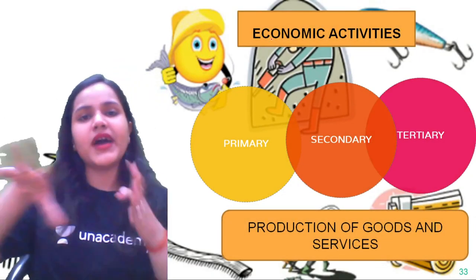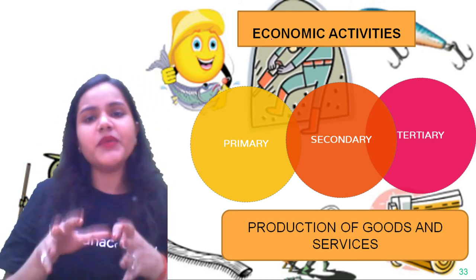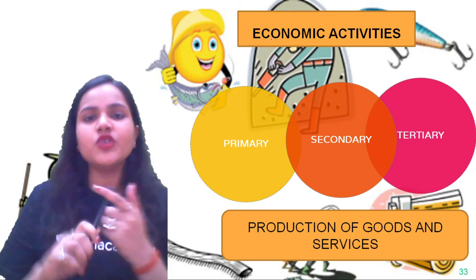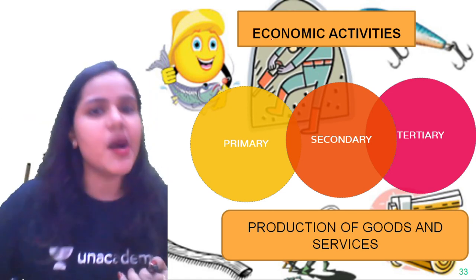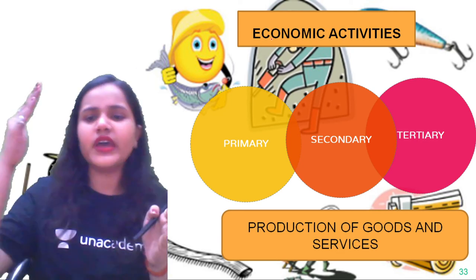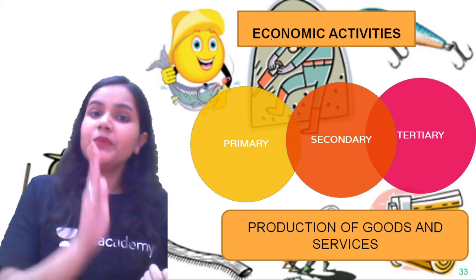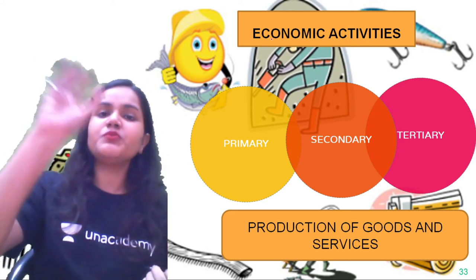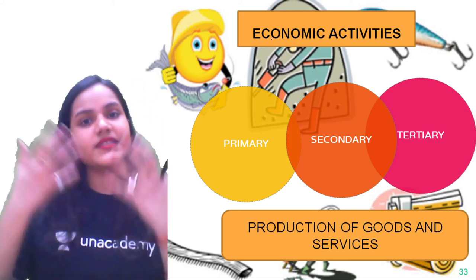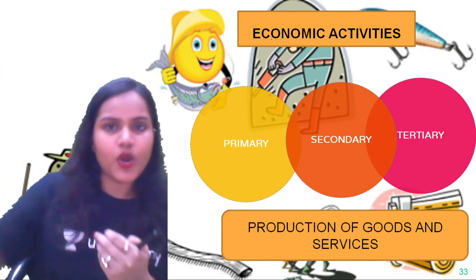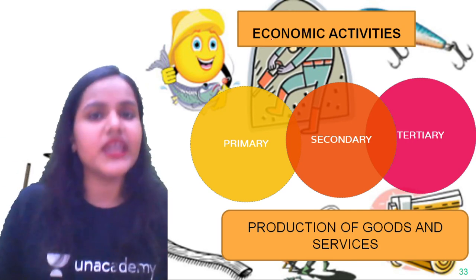The next important point is about economic activities. Economic activities are those in which we work for profit or earning — leading to the production of goods and services. We have two types: market activities and non-market activities. Market activities are those where people earn a certain amount of money — salary and remuneration is generated. Non-market activities are for self-consumption — not for any particular profit or revenue generation.